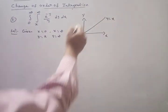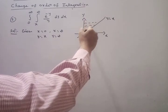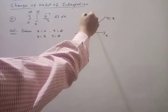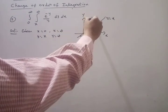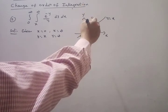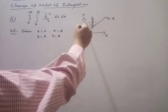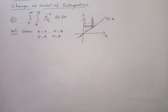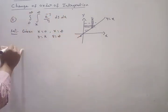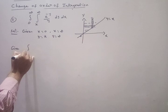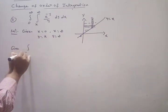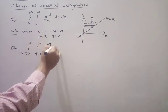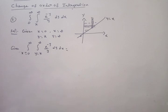So Y = X is a straight line through the origin and this is the region of integration. Given: X from 0 to ∞, then Y from X to ∞ of e^(−Y)/Y dY dX. To change the order: Y goes from 0 to ∞ as the outer integral, and X goes from 0 to this line Y = X, so X = Y.